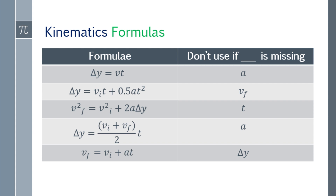The formulas are: first, delta y equals vt. Second, delta y equals initial velocity times time plus 0.5 times acceleration times t squared. Third, final velocity squared equals initial velocity squared plus 2 times acceleration times delta y.